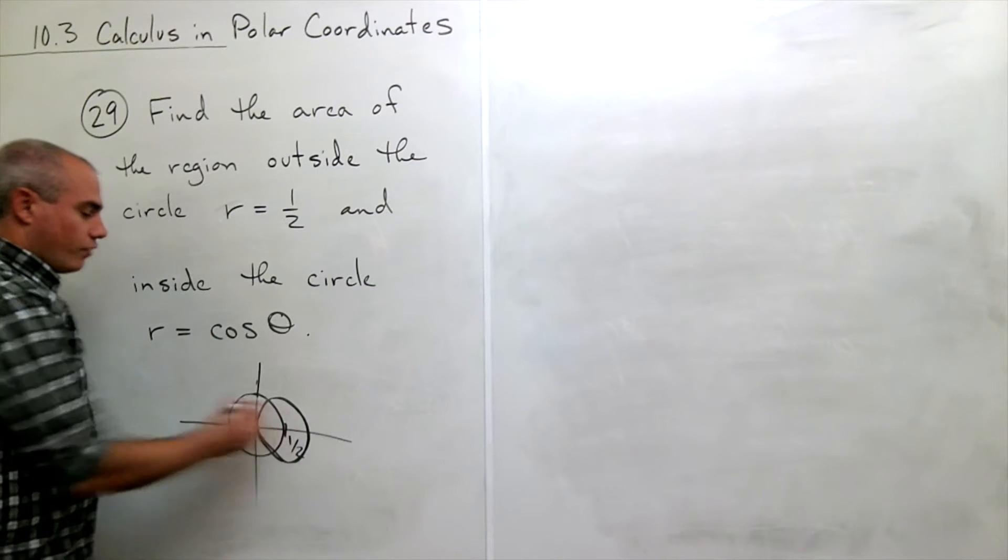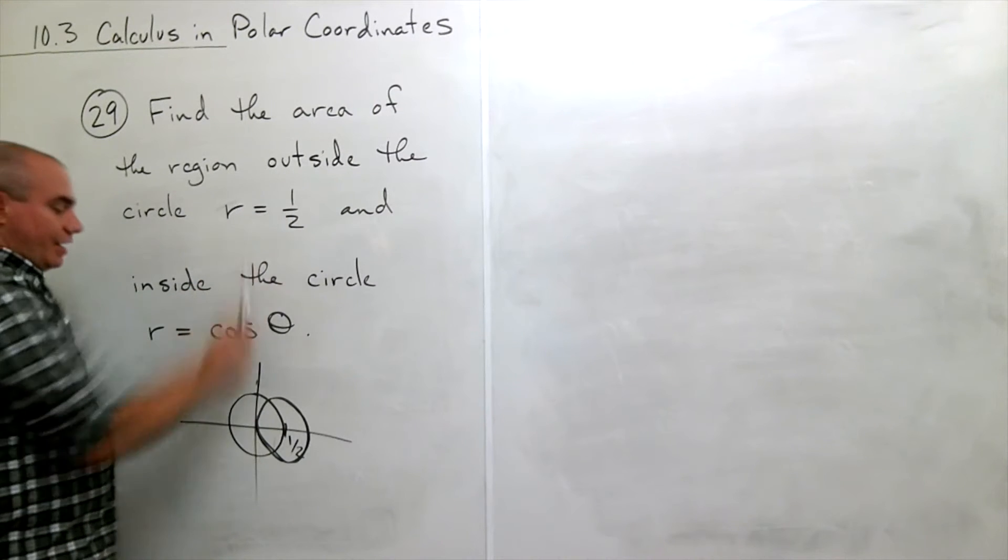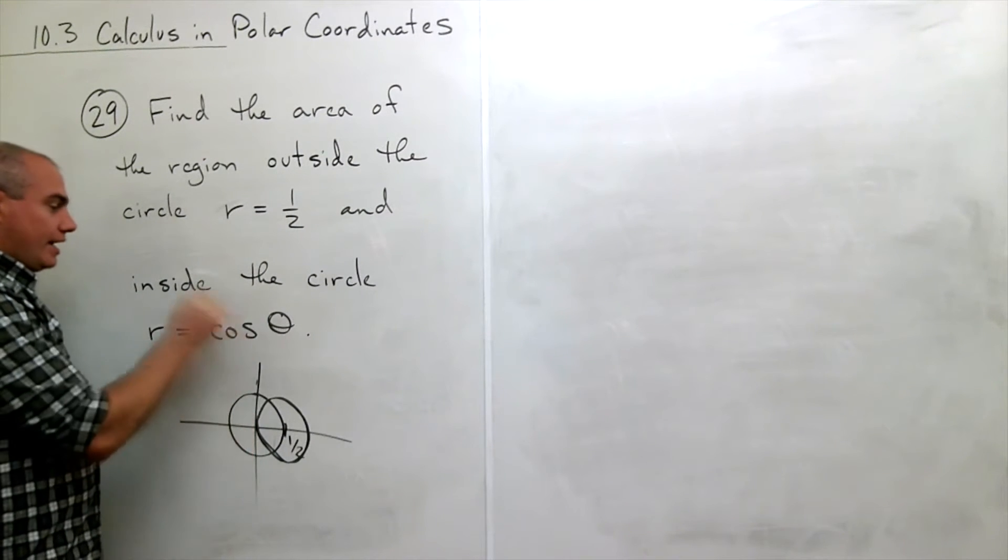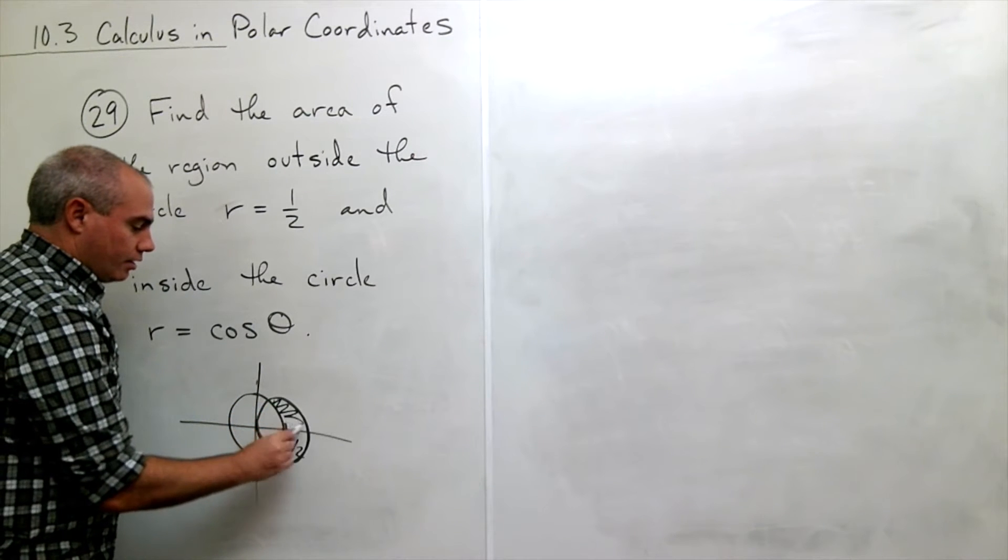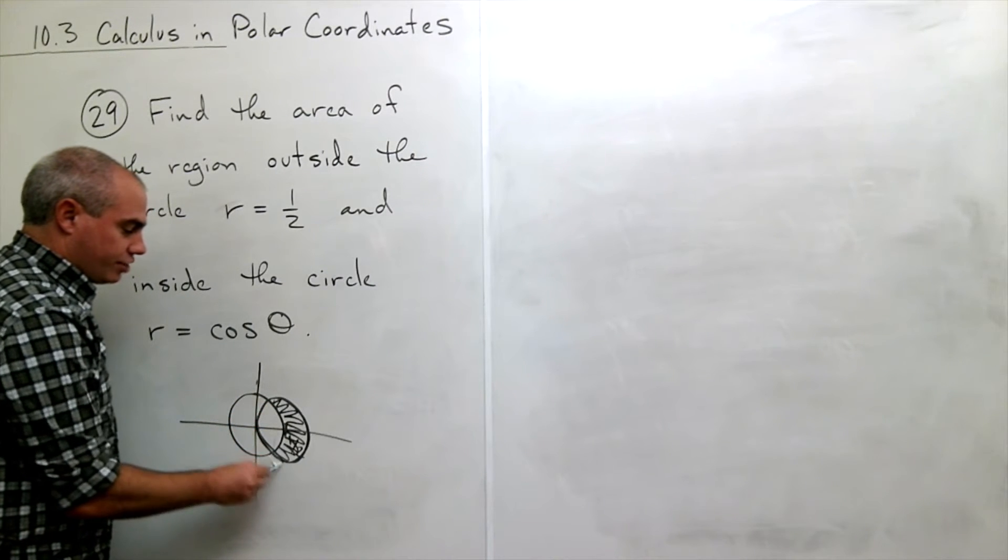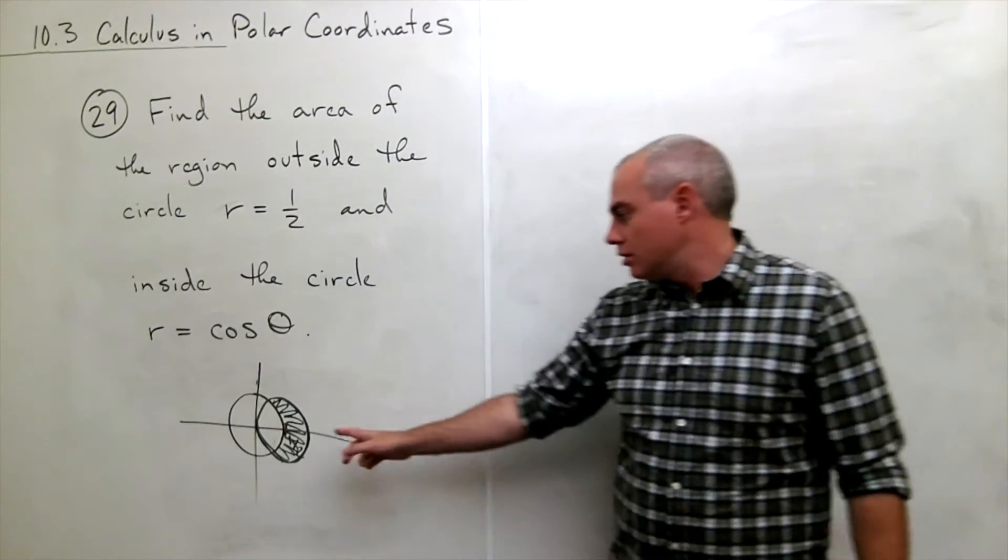Each has radius one-half. And I want it to be outside of the first circle and inside of the second circle. So what we're talking about here is this crescent-shaped region sitting over here on the right.